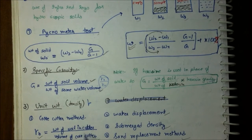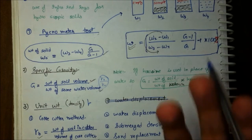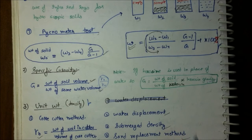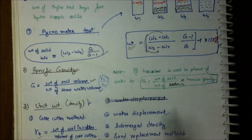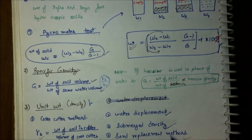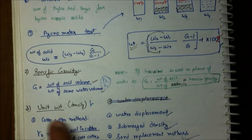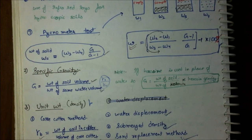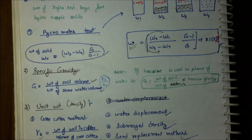For measuring unit weight and density in the field, the core cutter method is used: gamma_b equals weight of soil in cutter upon volume of core cutter. Other methods include the water displacement method, submerged density method, and sand replacement method. That covers all the basics of soil mechanics — all formulas need to be remembered as we continue. Thank you.